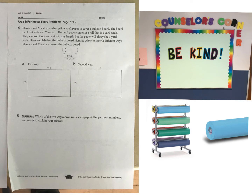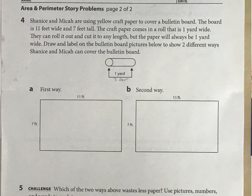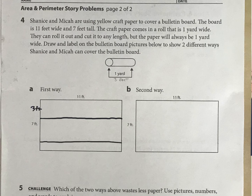What are two different ways you could cover up this board with yellow paper? If the board is 7 feet wide, one way is to cover it with one long horizontal piece of paper — that's three feet each time — so three feet by 11. Down here, I only need one more foot, so I'm basically just cutting off the extra paper on the side.